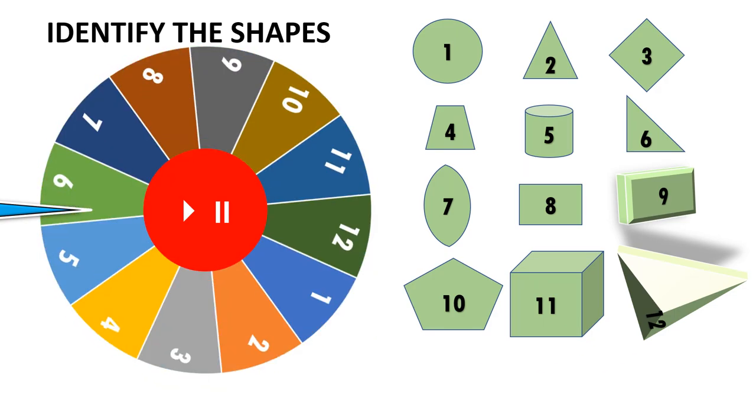When I stop it, suppose the number has come 5. This 5 number is this one, so it is a cylinder. You can ask the child, it is a cylinder.